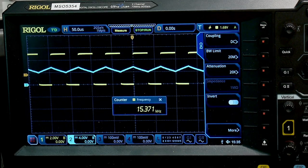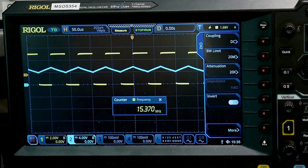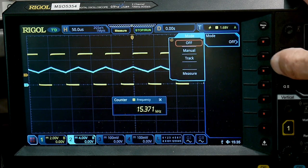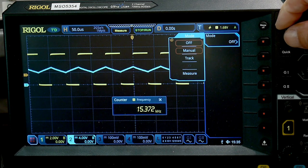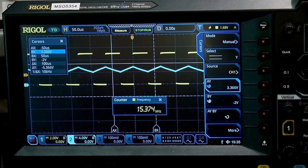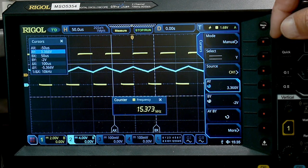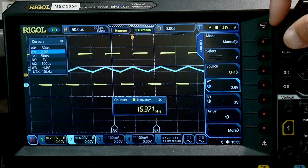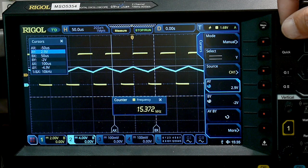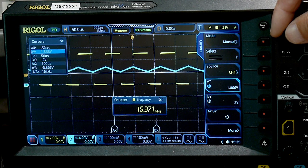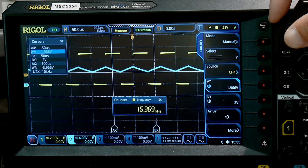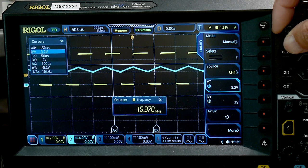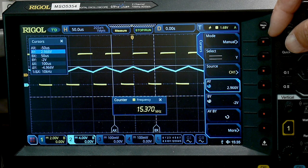We could try to take a look at the voltages at which it switches here. Let's go to manual cursors and select one of these. So at the high it's switching at about 2.9 volts and at the low it's switching at about 1.9 volts.